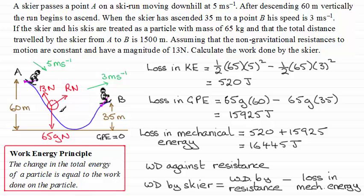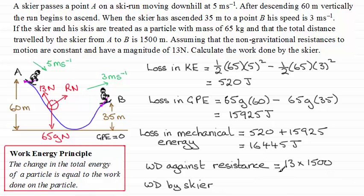So when it comes to working out the work done against resistance, then this is going to be the force of 13 Newtons times the distance, which is the distance of this slope. We're told it's 1,500 meters. So that's going to be multiplied then with 1,500 meters. And so if you work this out, it comes out at 19,500 joules. And you can see that this is greater than what we had for the loss in mechanical energy.